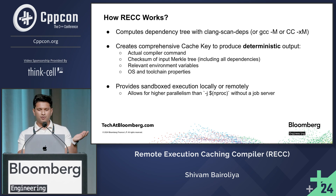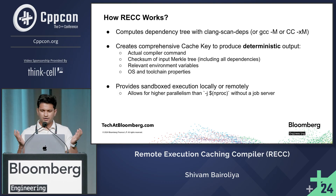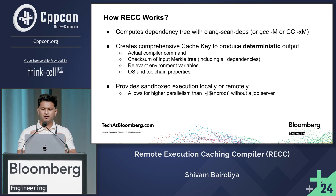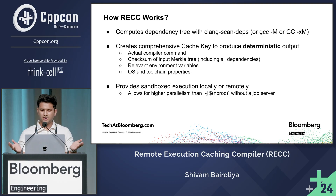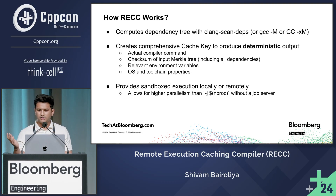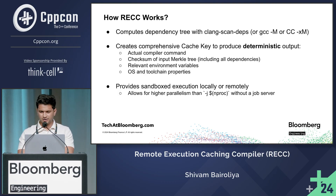Since we already know everything needed to produce a deterministic output, we can execute the compile remotely on worker machines. This means that even if you have a local machine with limited resources — say four cores — you can leverage a remote execution service to run your build with much higher parallelism, potentially using hundreds or thousands of cores simultaneously. This can dramatically reduce build times for large projects.